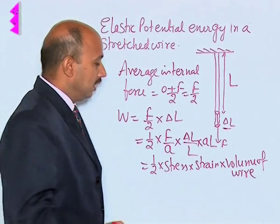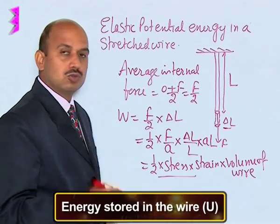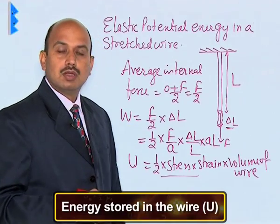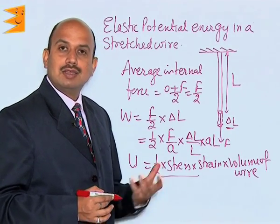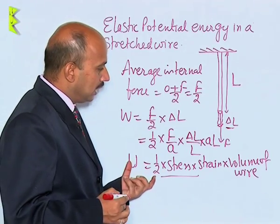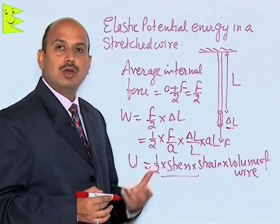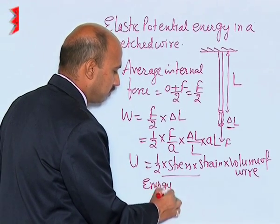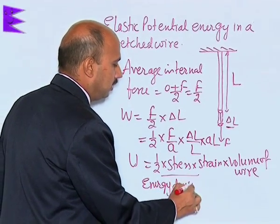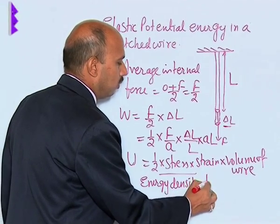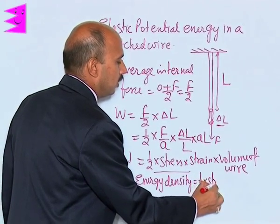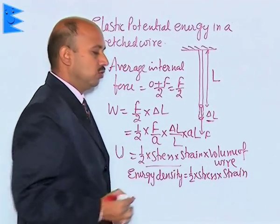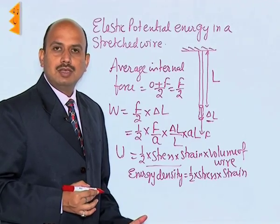So this is the formula for the energy stored in the wire, represented by U. Now we can get energy density also. Energy density is equal to total energy stored divided by volume of the wire. So energy density can be written as: energy density = half into stress into strain. This is the formula for the energy density.